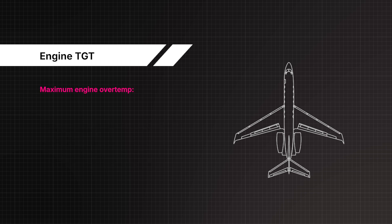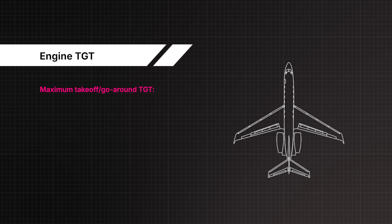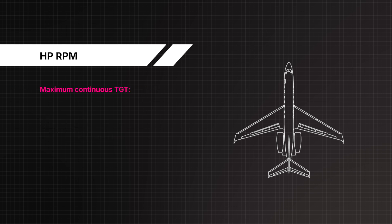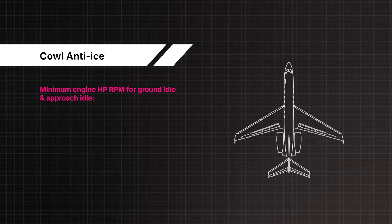Maximum engine overtemp: 801 to 820 degrees Celsius, maximum of 20 seconds. Maximum take-off go-around TGT: 716 to 800 degrees Celsius — 5 minutes with both engines, 10 minutes on one engine. Maximum continuous TGT: up to 715 degrees Celsius, no time limitation. Minimum engine HP RPM for ground idle: 46.6%; approach idle: 67.0%.